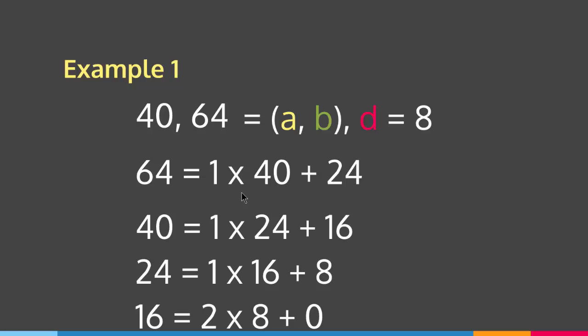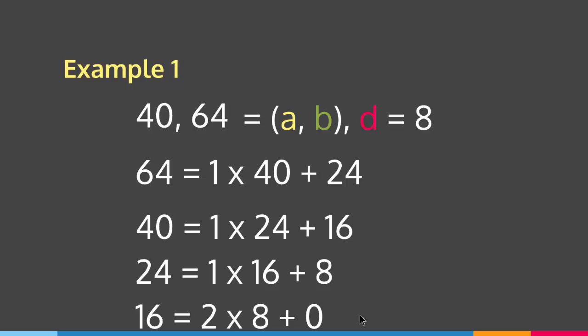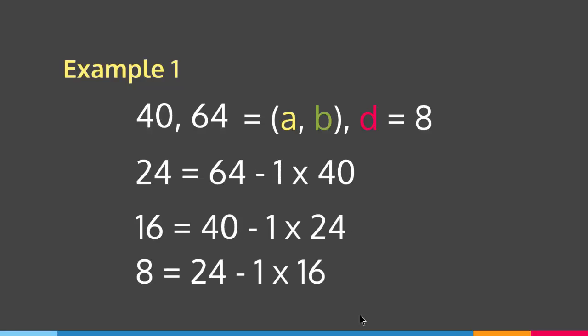Now we write each equation in terms of its remainder. We take the quotient term to the other side. So: 24 equals 64 minus 1 times 40; 16 equals 40 minus 1 times 24; and 8 equals 24 minus 1 times 16. We do this for all steps except the one with remainder 0.